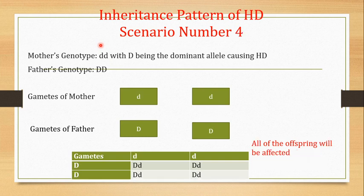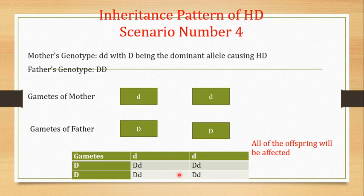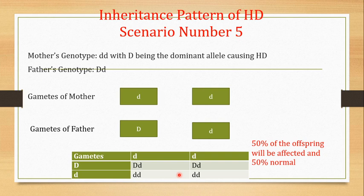It should not be a surprise to see a normal offspring from two HD-affected parents if both of them are heterozygous. Scenario number four: the mother is normal — she has both normal copies of the allele small d small d — but the father is homozygous for Huntington's disease, carrying two copies of the diseased allele capital D capital D. All gametes of the mother will be small d, all gametes of the father will be capital D. All offspring will be heterozygous and all will be affected.